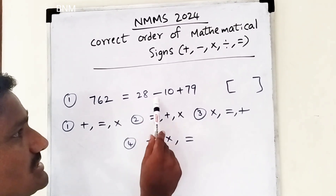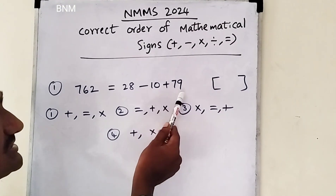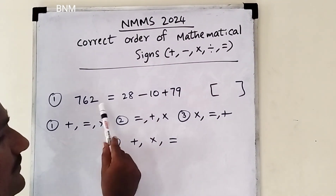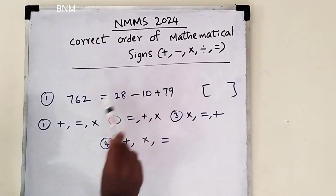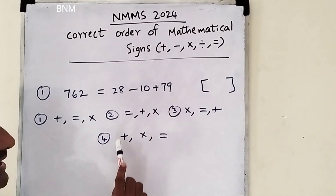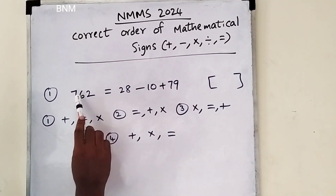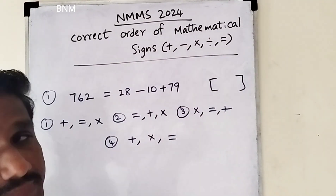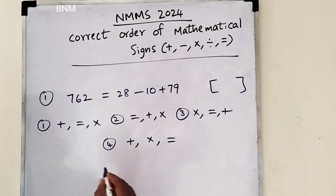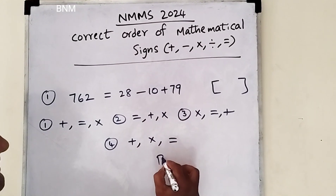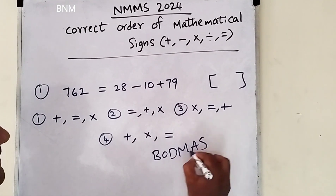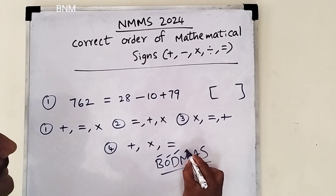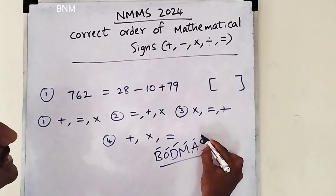Mathematical Science. If you have a question where the left hand side and the right hand side are not equal, we use the correct symbols to find the correct answer. Left hand side, right hand side — equal to correct answer. I will try to make a Board DMAS. Bracket, Half, First, Division, Multiplication, Addition, Subtraction.